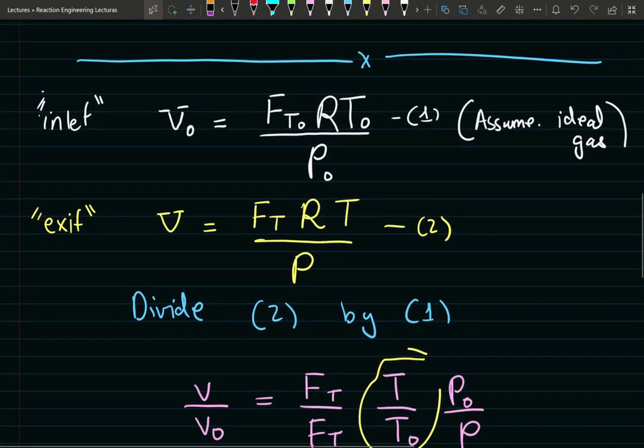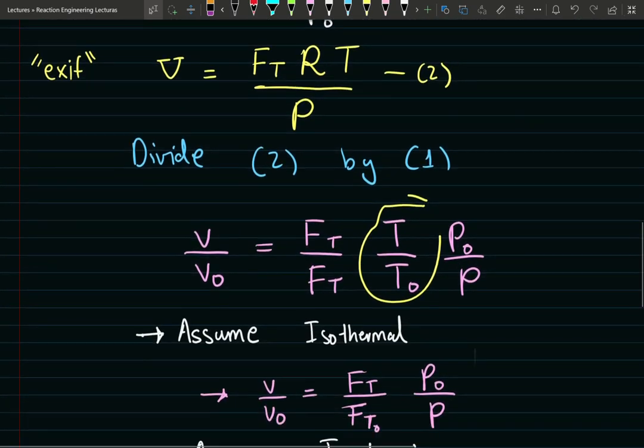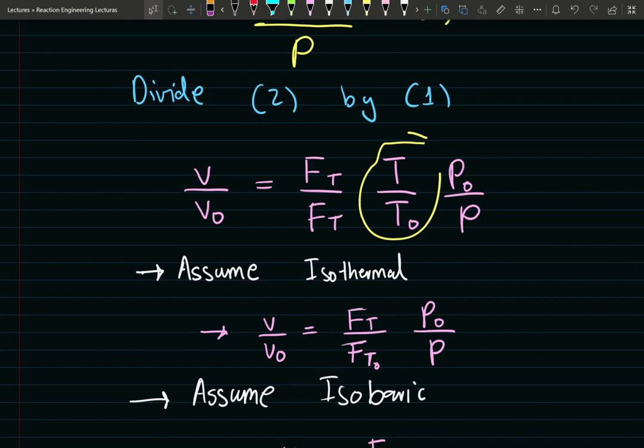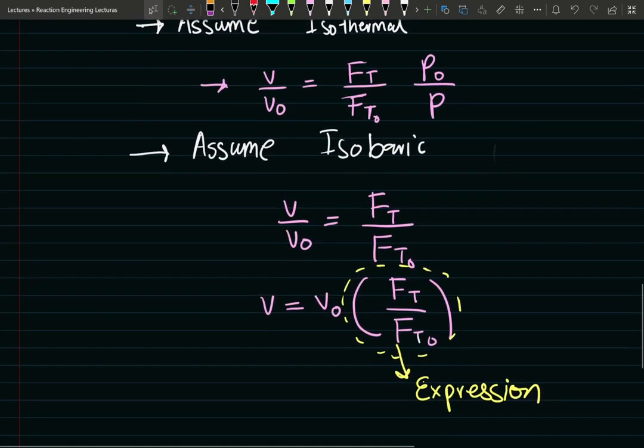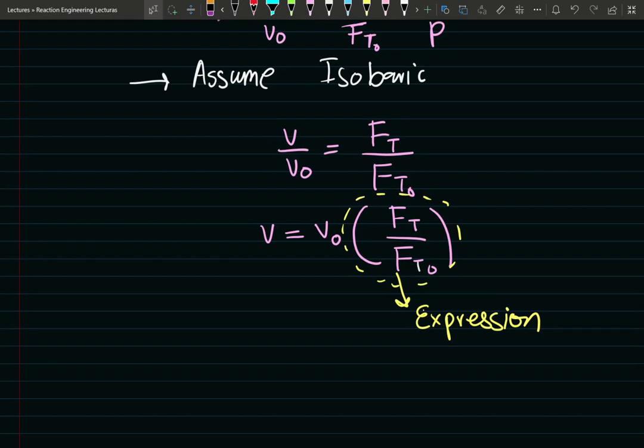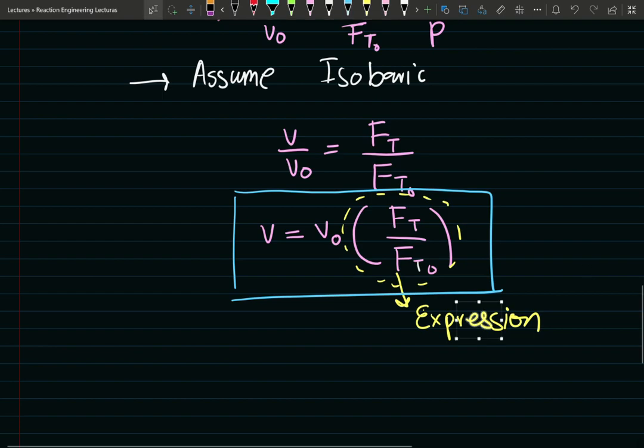We need to account for the change in volumetric flow rate. The first five chapters, our discussion is going to be based on the conversion of A. I hope you guys are following the textbook. Inlet and exit using the ideal gas law, nothing fancy here. Just performing some simple algebra, this is our result so far. In the next video, we're going to reverse engineer exit over inlet total flow rate. Thank you guys for watching.